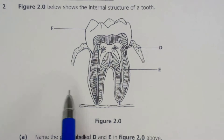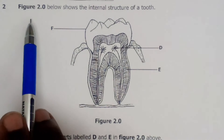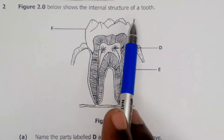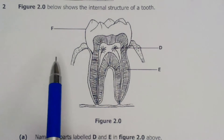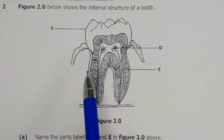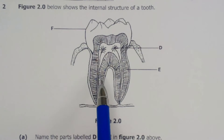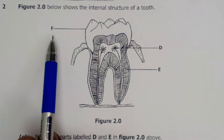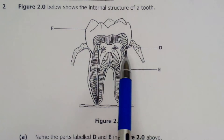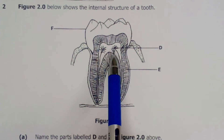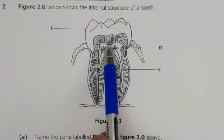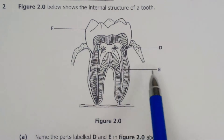This is question number 2 and we have figure 2.0 below, which shows the internal structure of a tooth. The internal structure has been cut longitudinally and the labeled parts include F, which is the enamel, and D, which is the nerve ending.